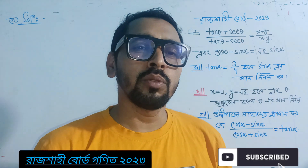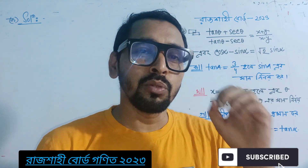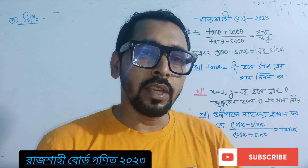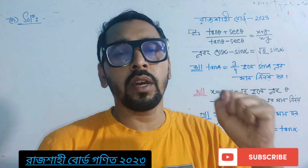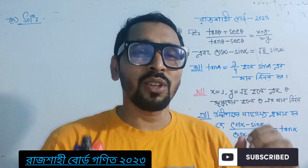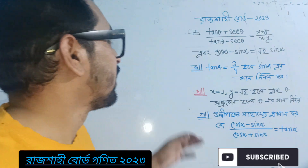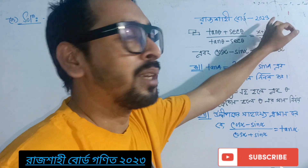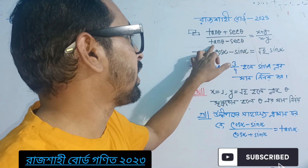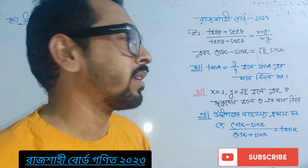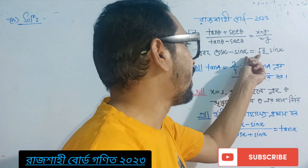We have a very good question in this class. We will try to observe and find out what the question is. The first question is: tan theta plus sec theta divided by tan theta minus sec theta is equal to x plus y divided by x minus y. The second is: cos alpha minus sin alpha is equal to root 2 sin alpha.